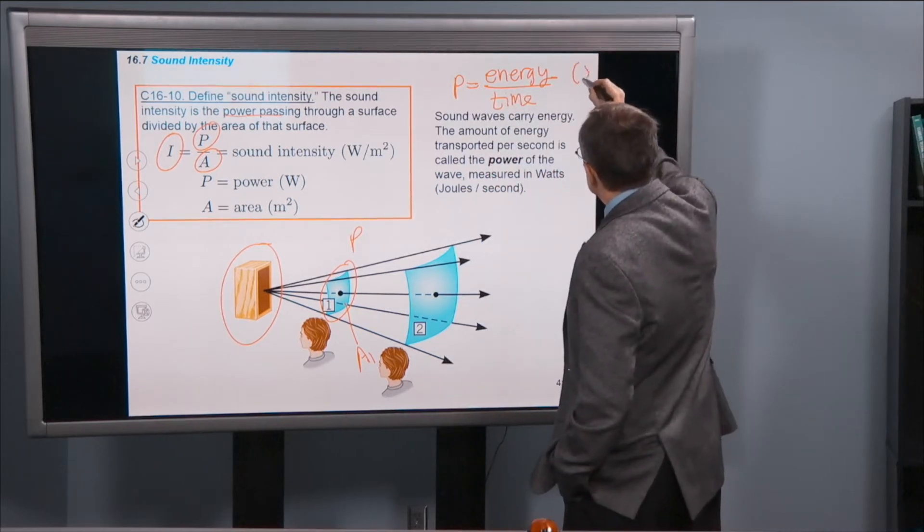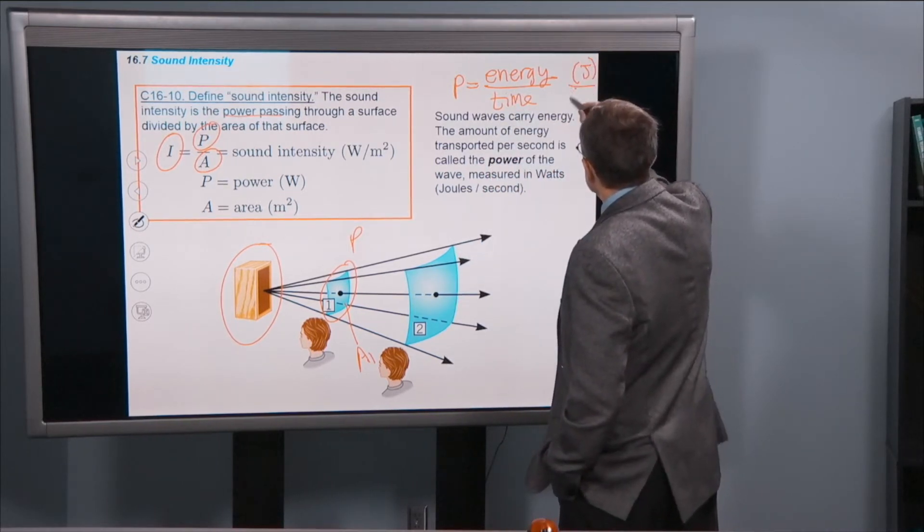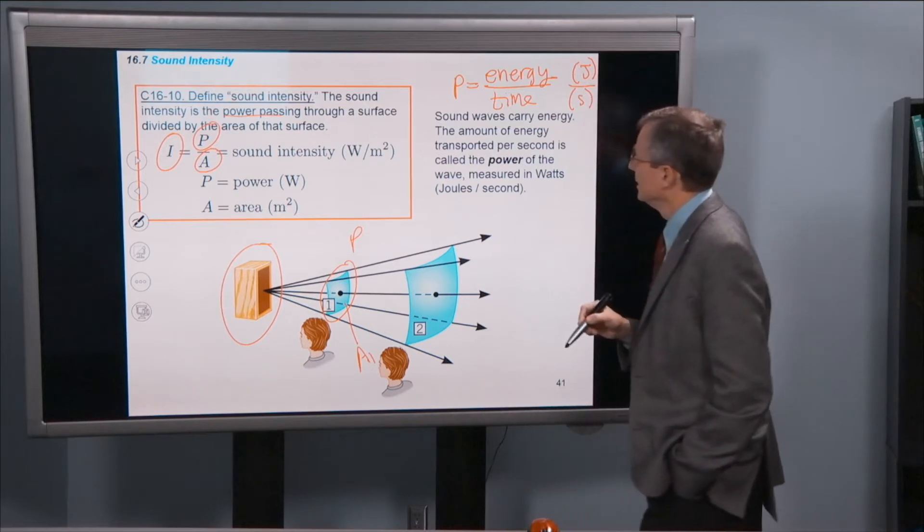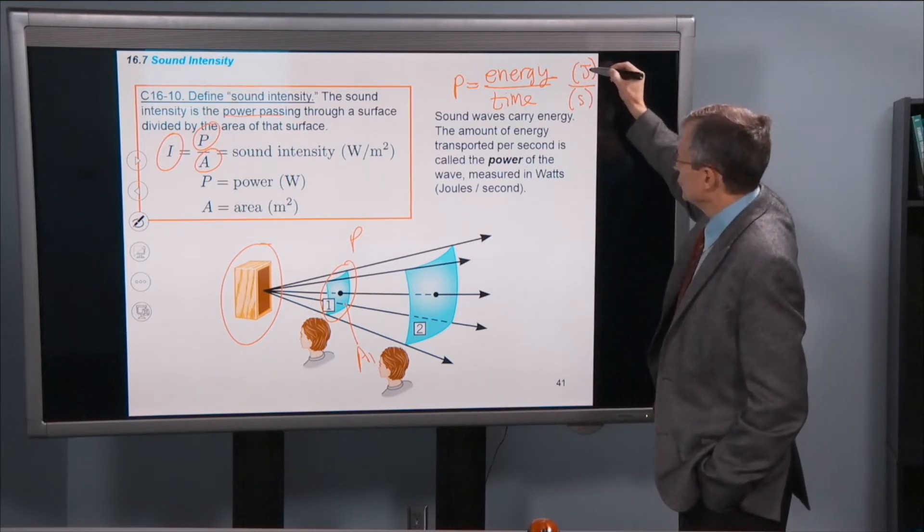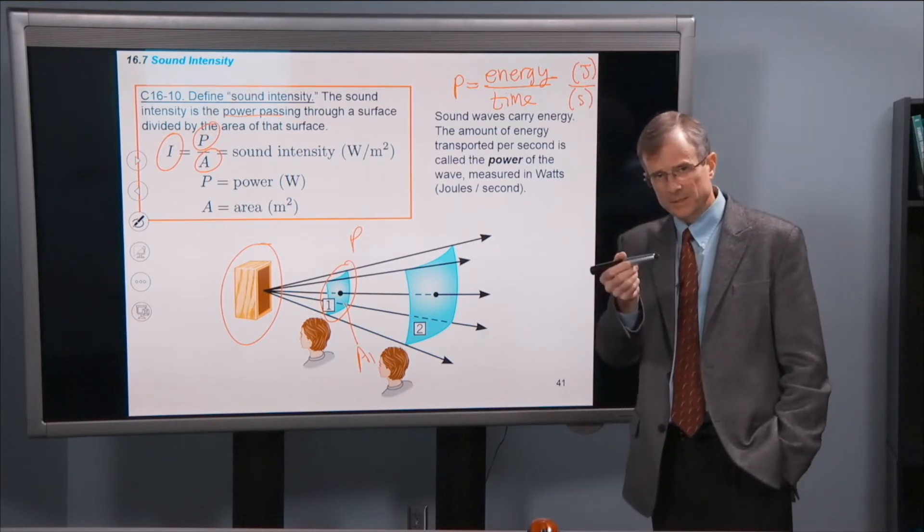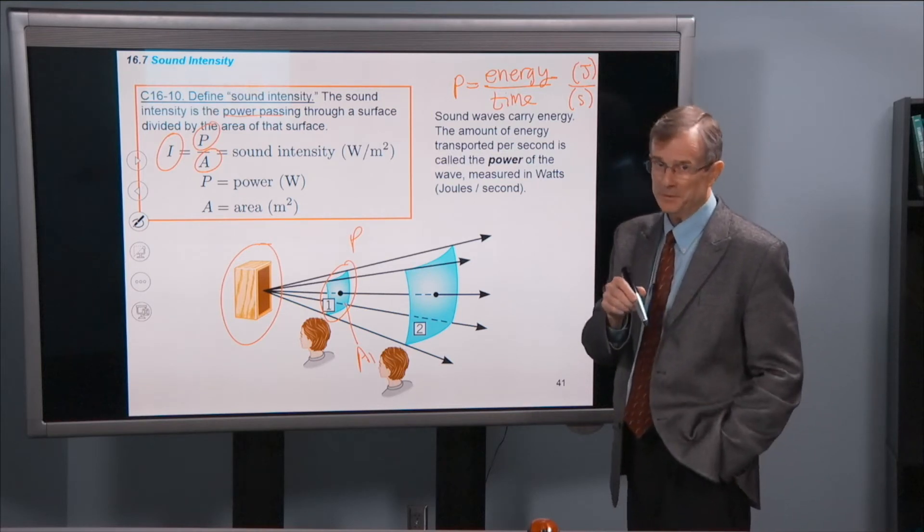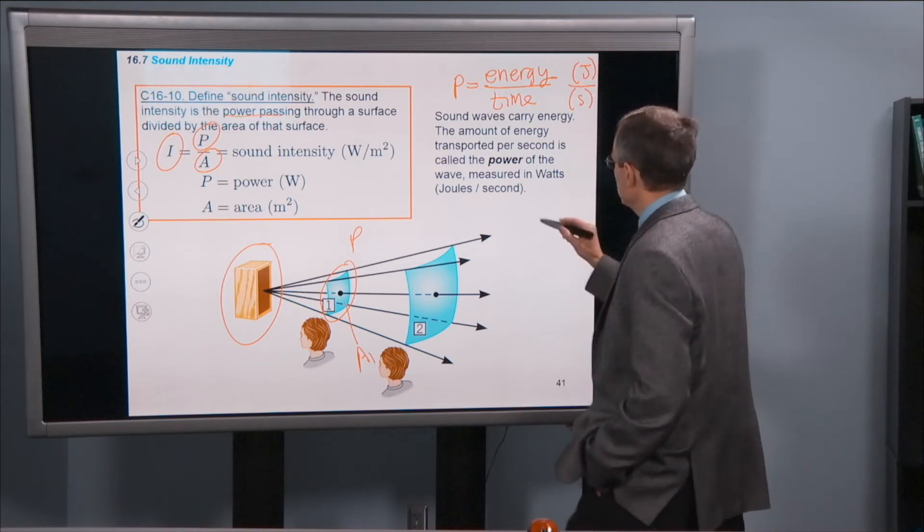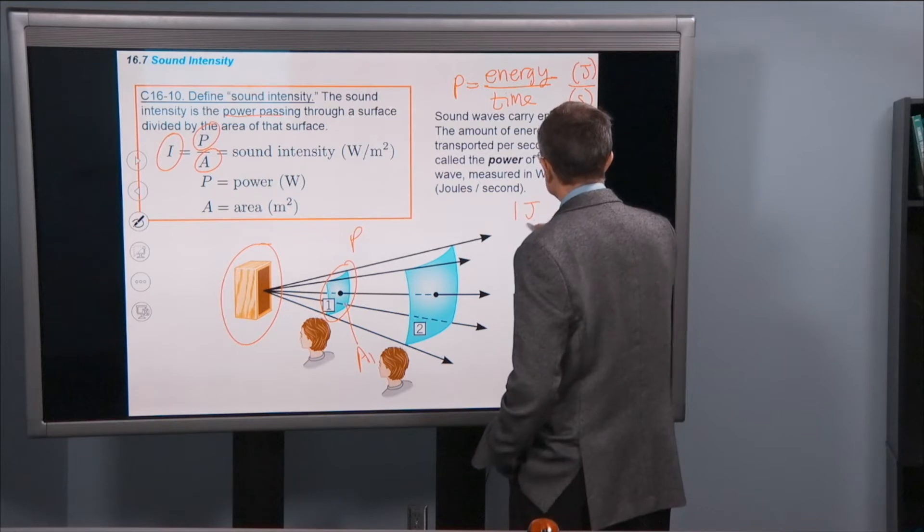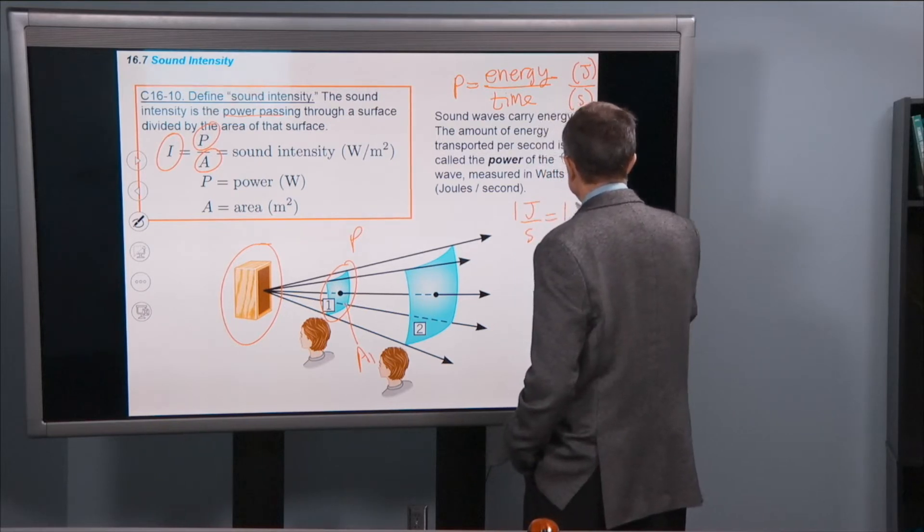Energy is measured in joules, time is measured in seconds, and a joule per second is, some of you will remember, a watt. One joule per second equals one watt.